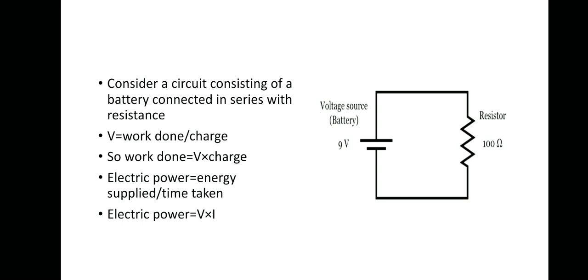Now, for the charge delta Q that we are considering, we use the relation that potential difference equals work done per unit charge. From this, the work done is V multiplied by delta Q.